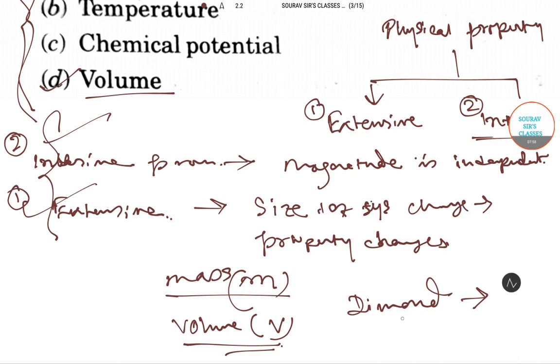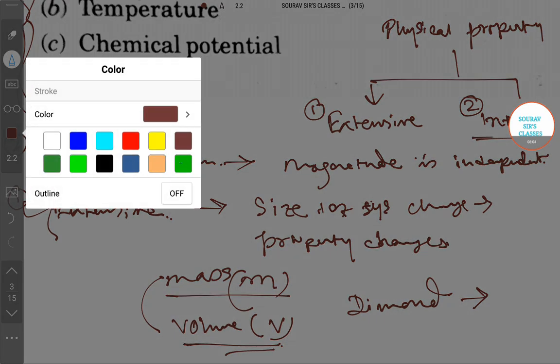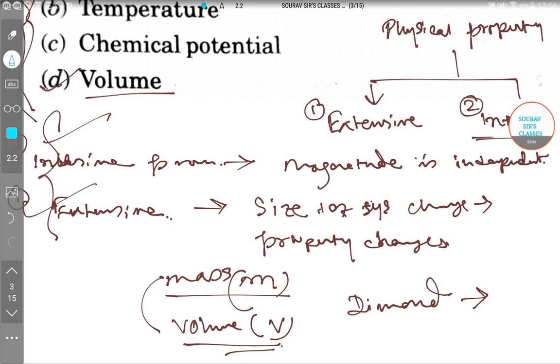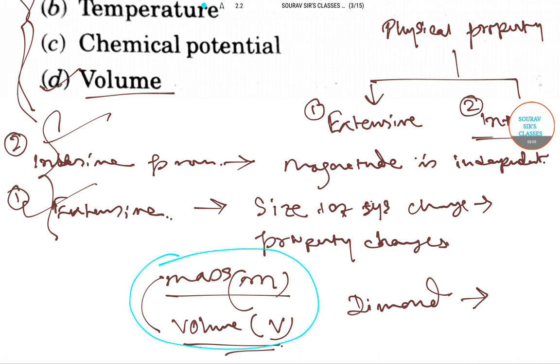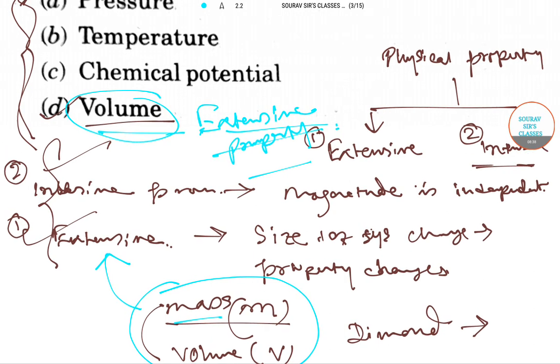So in that case, mass and volume - both are extensive property. This mass and volume, so here we have the option only volume, so we can say volume is the extensive property. Answer will be option D.